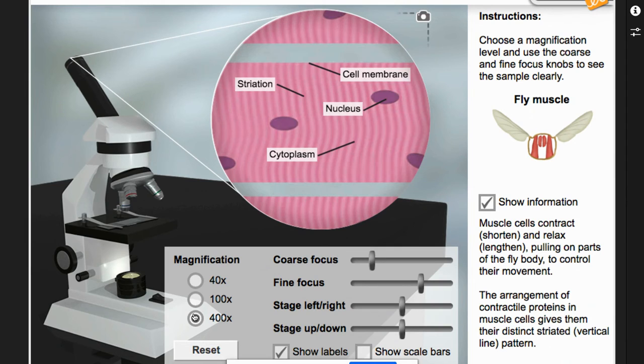And then 400x. And see, because I have the Show Labels, it's still already there too. And then I click on the Show Information and everything's there.